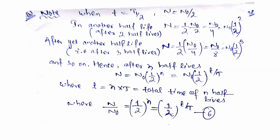In the last class, I discussed the half-life period of a radioactive element. The half-life period is the time during which the substance decays to half of its original value. That means if the complete element is 100%, 50% of the element will decay in this time period. In T-half time, the substance becomes half of its original value.